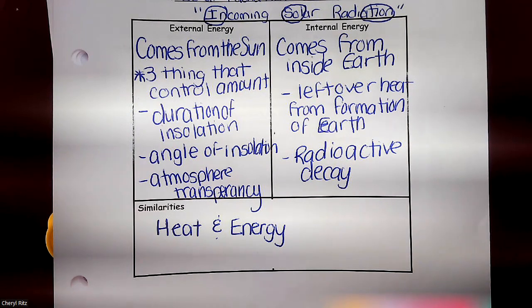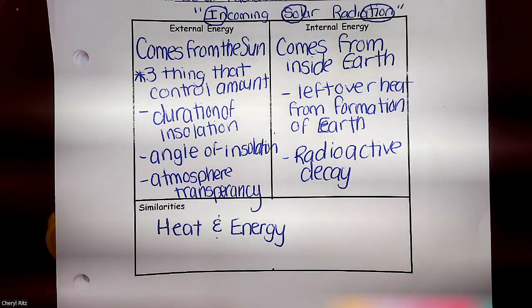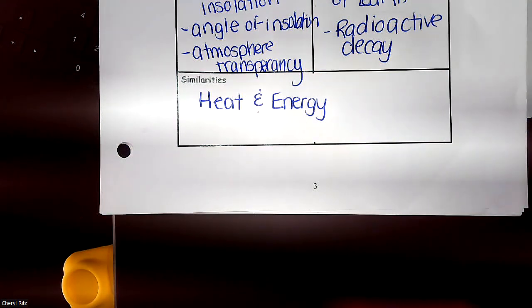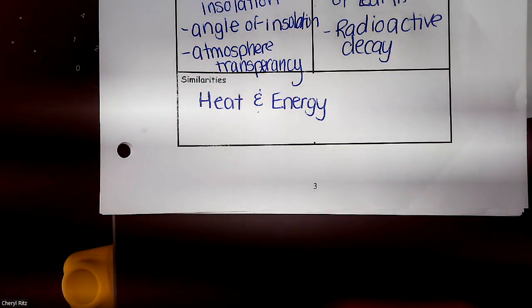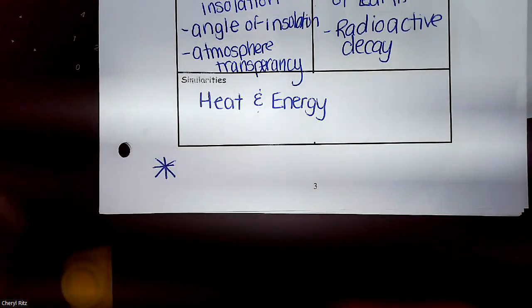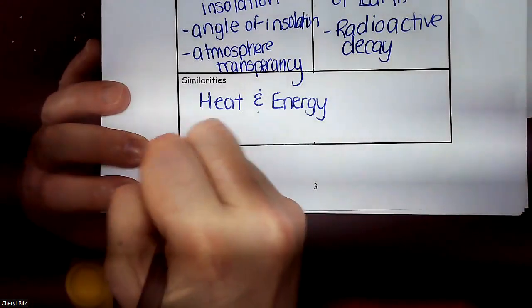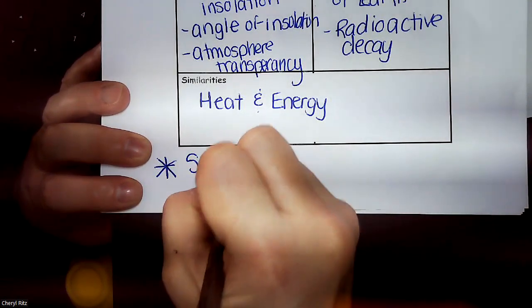I want to add one thing we did not put in the chart — I want to add a little bit of notes in this blank space underneath. Do you guys know from the reading or off the top of your head how the sun produces energy in the first place? Go back to the reading if you don't remember. How does the sun produce energy?